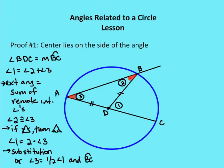AD is congruent to BD since they are both radii, so angle two and angle three are congruent because if the sides are congruent, the angles opposite them are congruent. Since angle two is congruent to angle three, I can substitute three for two, giving me angle one equals two times angle three. Therefore angle three is one half of angle one — one half of arc BC. That's the proof where the center lies on the side of the circle.